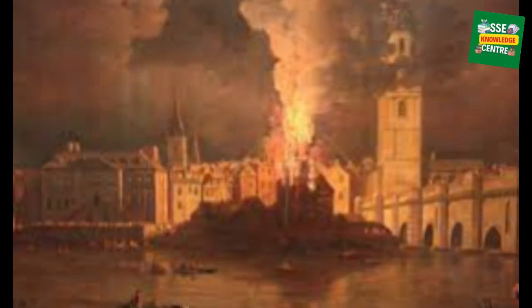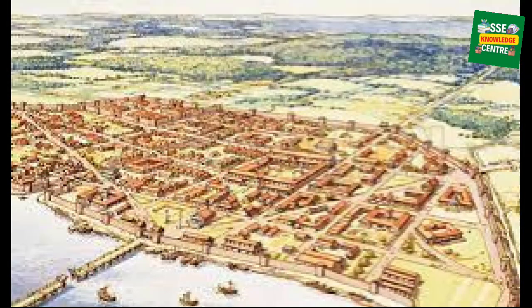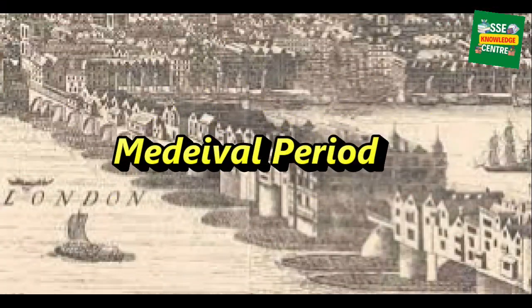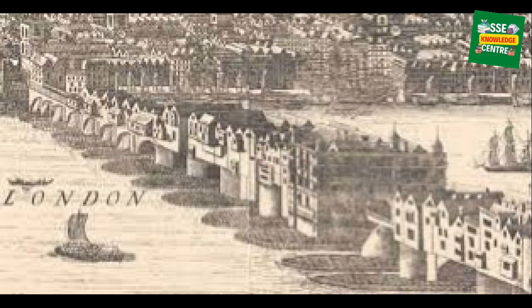Over the centuries, the bridge faced numerous challenges, including fires and collapsing arches. In 1281, a great fire destroyed several buildings on the bridge. It was rebuilt and expanded with additional shops and houses.